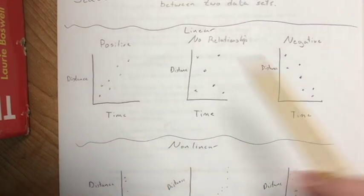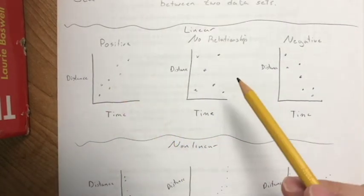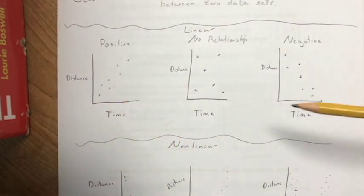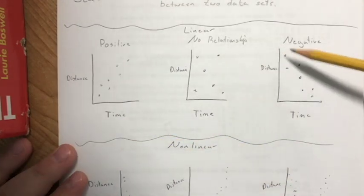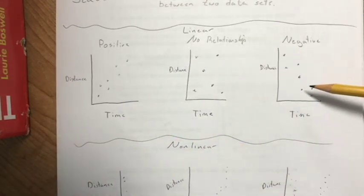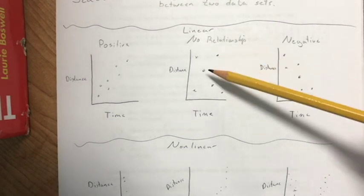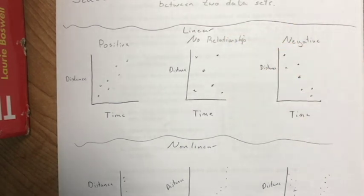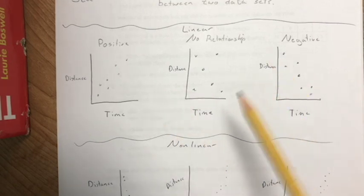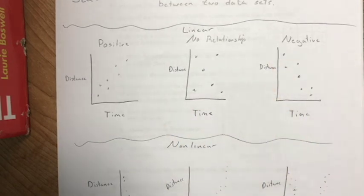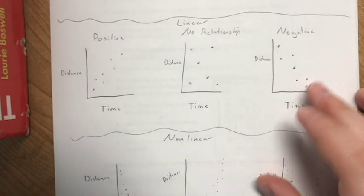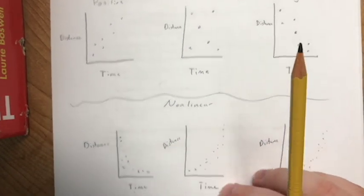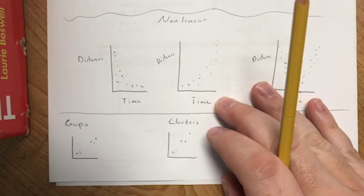To summarize: if the data points go upward, it's a positive relationship; if they go downward, it's a negative relationship; and if you can't tell, there's no relationship at all. These are the three most common types you'll see when dealing with linear scatter plots.